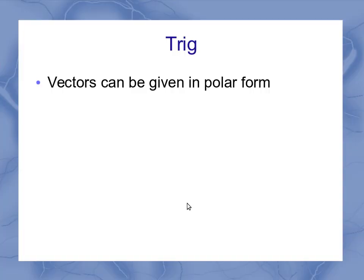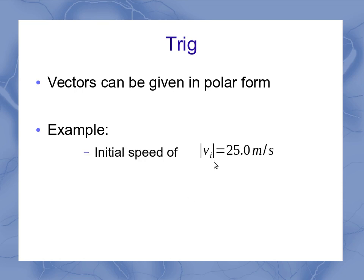Remember that vectors don't have to be given in component form. They're often given to you in polar form. For example, if you've got an initial speed, that's really the magnitude of your initial velocity. So if I have an initial speed of 25 meters per second, that's my magnitude. And if it's said that that's at an angle of 30 degrees above horizontal, that covers my direction.